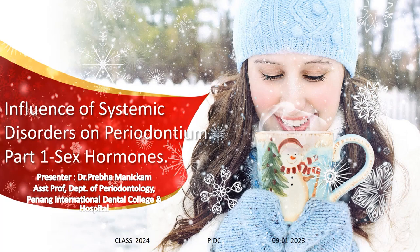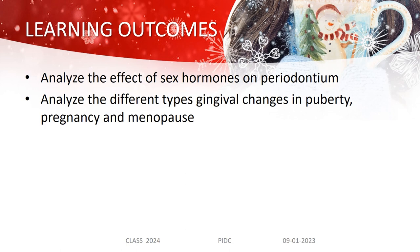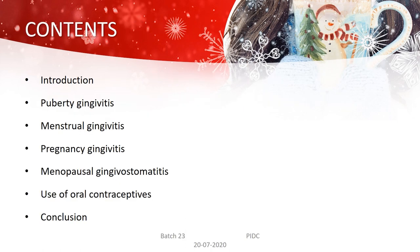Good morning. Today's class is on the influence of systemic disorders on the periodontium. Part one considers the influence of systemic disorders related to sex hormones. Learning outcomes include analyzing the effects of sex hormones on the periodontium, and analyzing the different types of gingival changes in puberty, pregnancy, and menopause. The lecture contents include introduction, pubertal gingivitis, menstrual gingivitis, pregnancy gingivitis, menopausal gingivostomatitis, and use of contraceptives, finishing with conclusions.